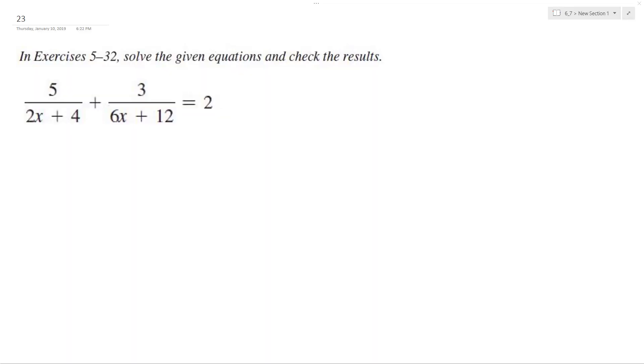Alright, let's solve the following problem for x. So what we can do here is just find a common denominator. If you look, all these, well, we can factor out a 2 here and we get x plus 2. Then over here we can factor out a 6 and we get x plus 2.